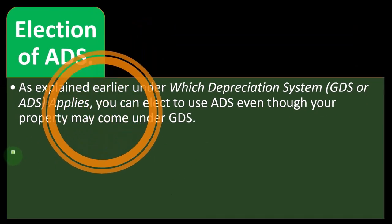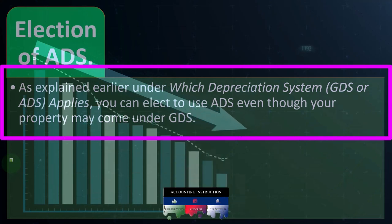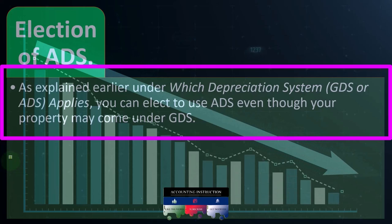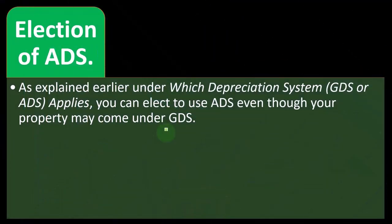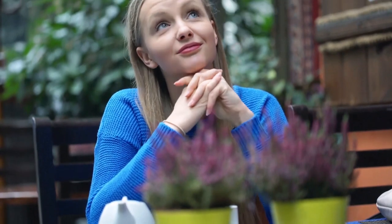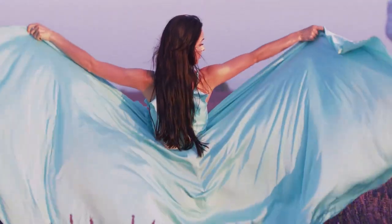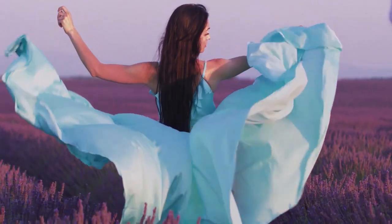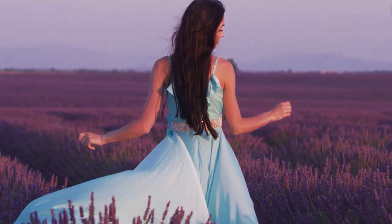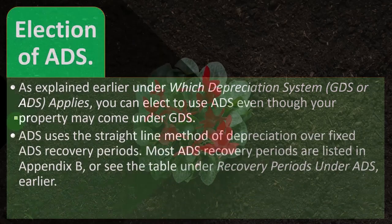Election of ADS: as explained earlier, even if your property falls under GDS, you can elect to use ADS instead. Usually with GDS you'd decide between double declining, straight-line, or 150%, but you can elect ADS, which is generally less advantageous. It might have a different recovery life or convention — for example, ADS typically uses straight-line — though it could have a different life period that might be preferable in some unusual circumstances.